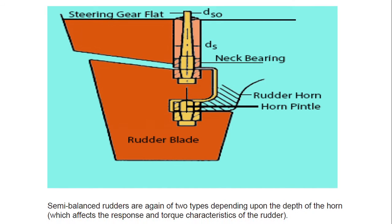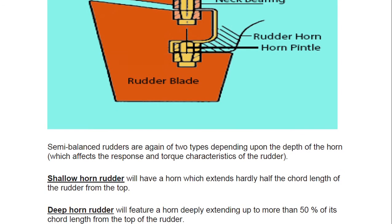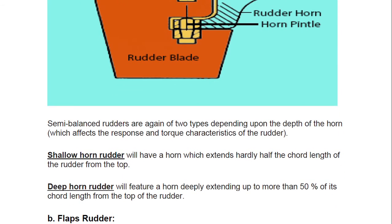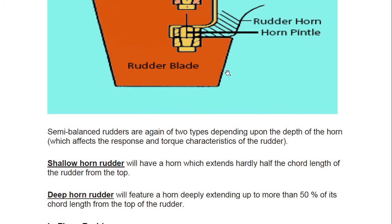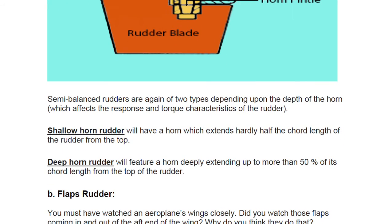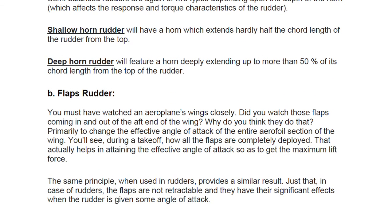Semi-balanced rudders are further classified into two types. A shallow horn rudder has a horn extending up to approximately half the chord length of the rudder from the top. A deep horn rudder features a horn extending more than 50 percent of the chord length from the top of the rudder.